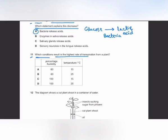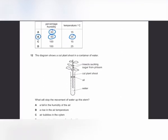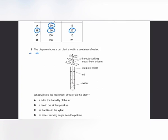MCQ number 11: which conditions result in the highest rate of transpiration? Lower humidity means higher transpiration, and higher temperature means higher transpiration. The answer is B — a humidity of 60% (low) and a temperature of 25°C (higher) give the highest rate of transpiration.